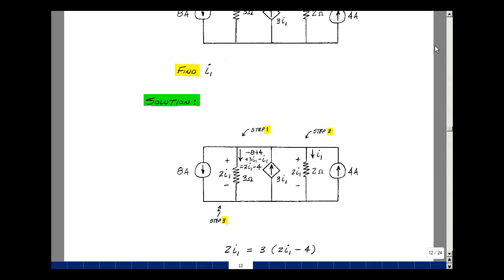What I'm going to do here is take the current leaving the node and make everything else enter the node. This enters the node, I'll have this enter the node, and this does too. Minus 8 amps is entering, 3I1 is entering, minus I1 is entering, and 4 is entering. So that's my values right here.